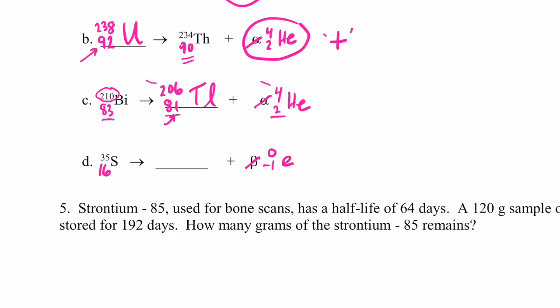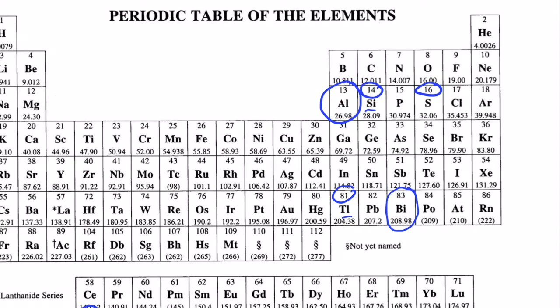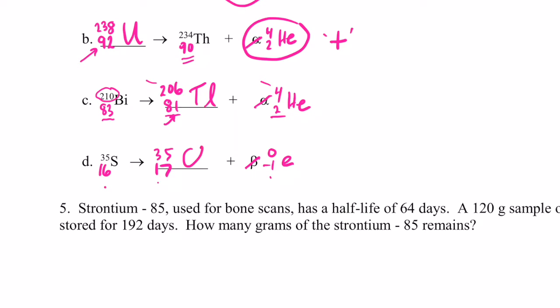And a beta particle, remember 0 over negative 1e is its symbolism here. So the product here will have 17 protons. 17 and negative 1 gives you my 16. And the mass number does not change, so it stays at 35. What element has the atomic number 17? That's pretty easy to find. Looks like 17 is chlorine. So Cl.